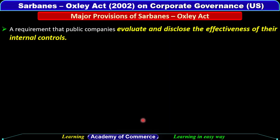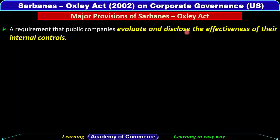Some other major provisions of the Sarbanes-Oxley Act include a requirement that public companies evaluate and disclose the effectiveness of their internal controls — that is, how effective the internal control system is at detecting errors, scandals, and frauds — and disclose that effectiveness to stakeholders.